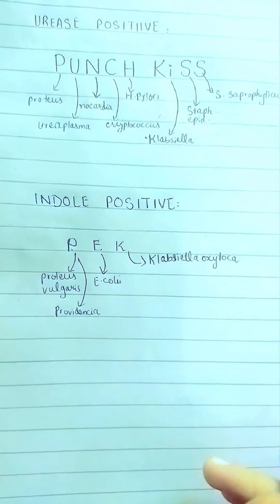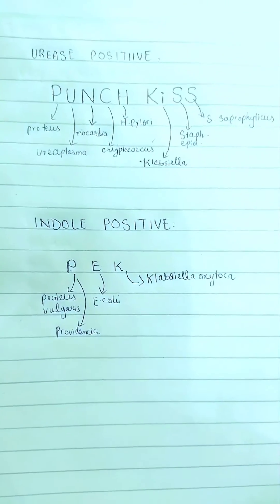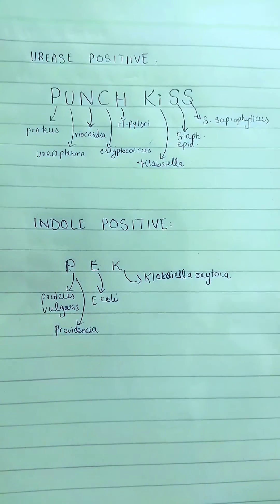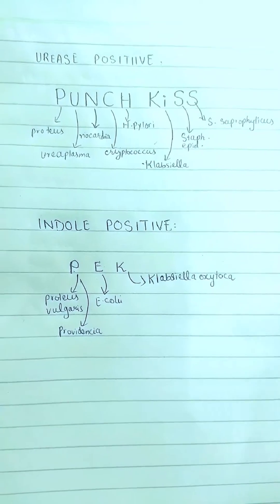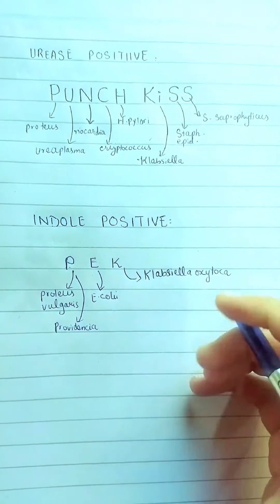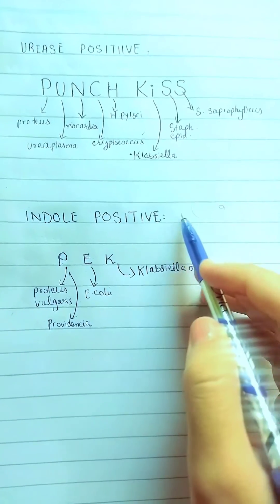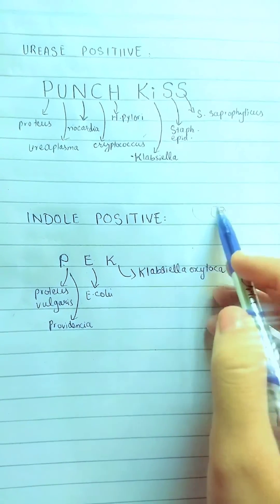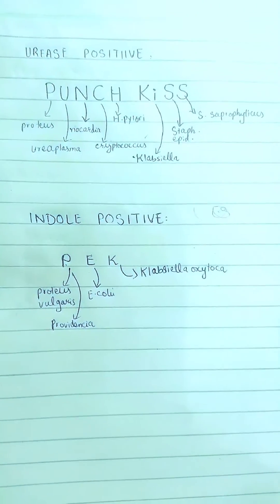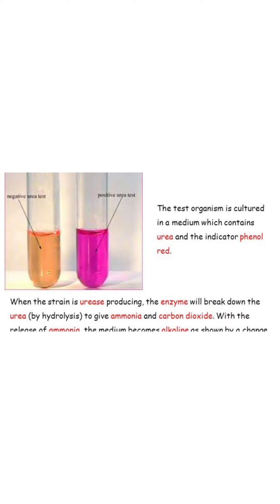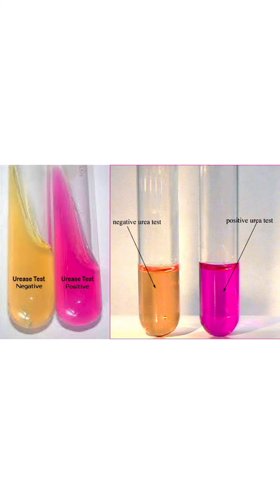I am also going to attach pictures in this video for indole positive and urease positive, showing how they appear in the test so that you can prepare for the OSCE as well. For indole positive you will notice a red color discoloration. For urease positive, the orange color of the agar will turn into a reddish purple or pink color.